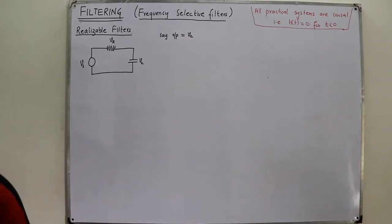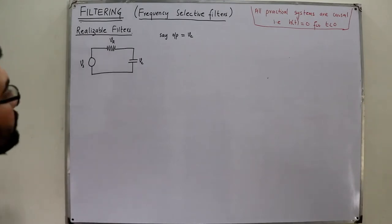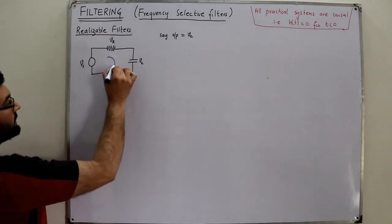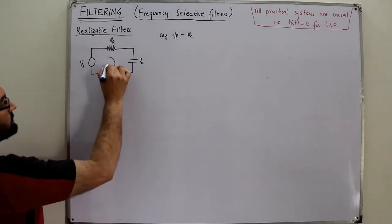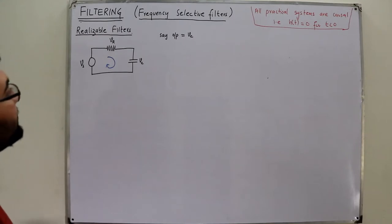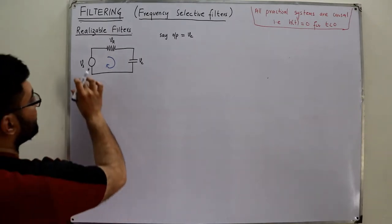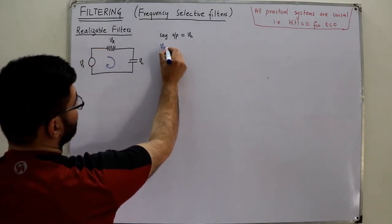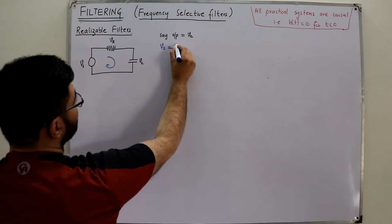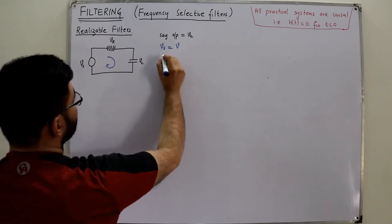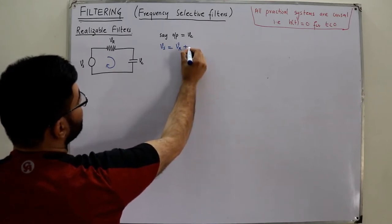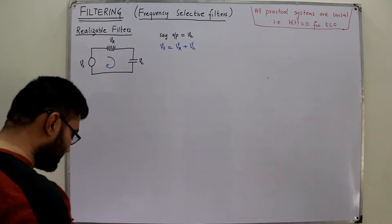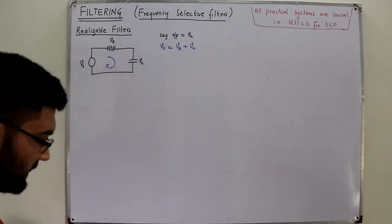If I apply KVL — Kirchhoff's voltage law — to this loop, the voltage rise is VS, which equals the two voltage drops: VR plus VC.